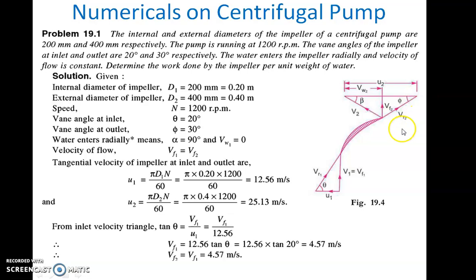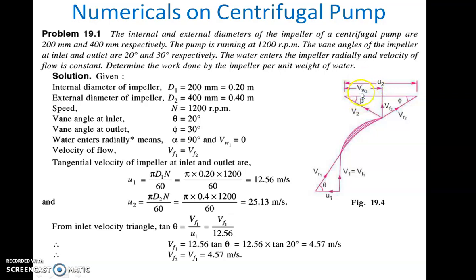Always remember this diagram: in between V2 and Vr2 you take U2, and in between V2 and Vf2 you take Vw2. The angle made by V2 with the horizontal is beta, and the angle made by Vr2 with the horizontal is phi. That is simple to remember.